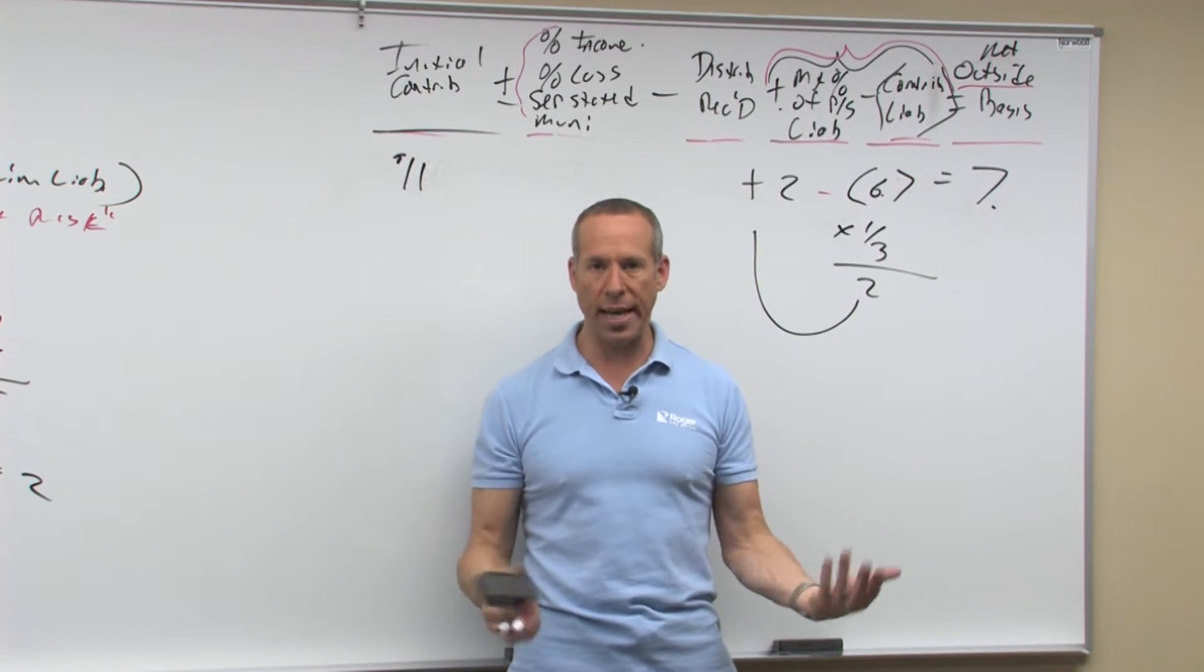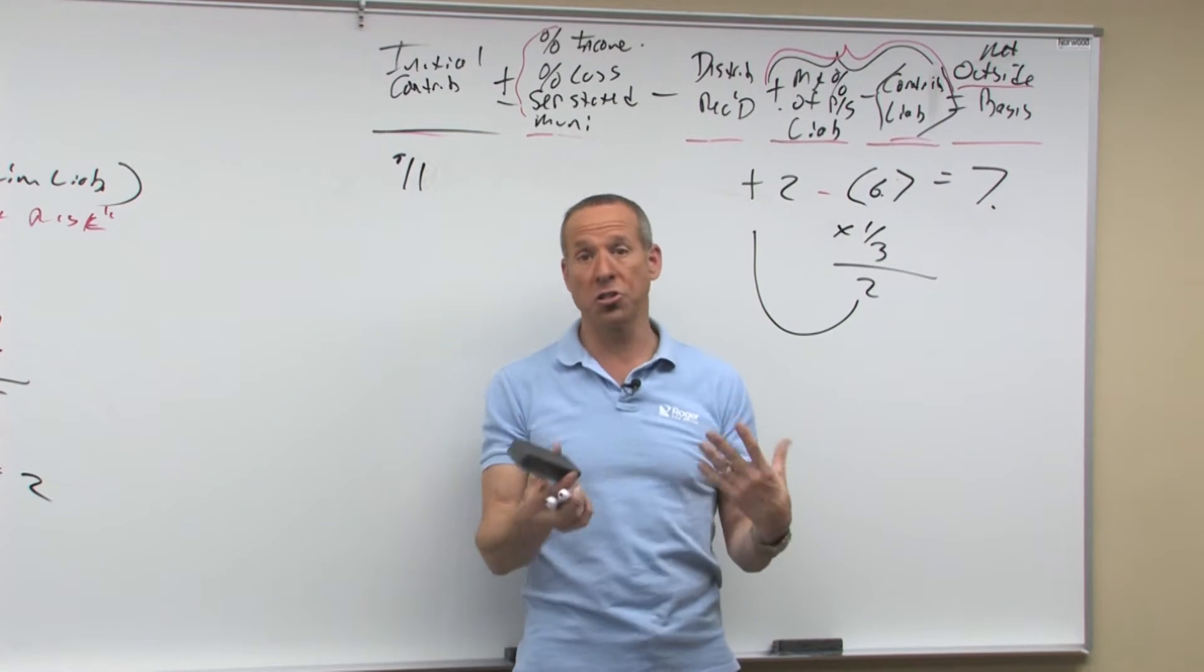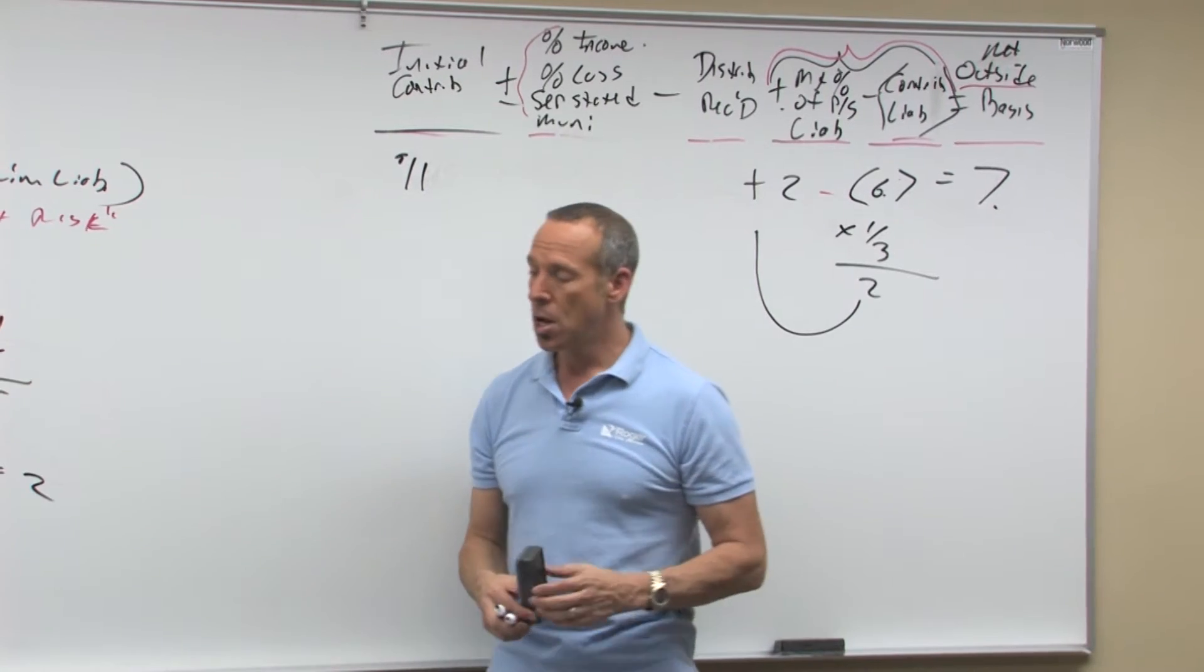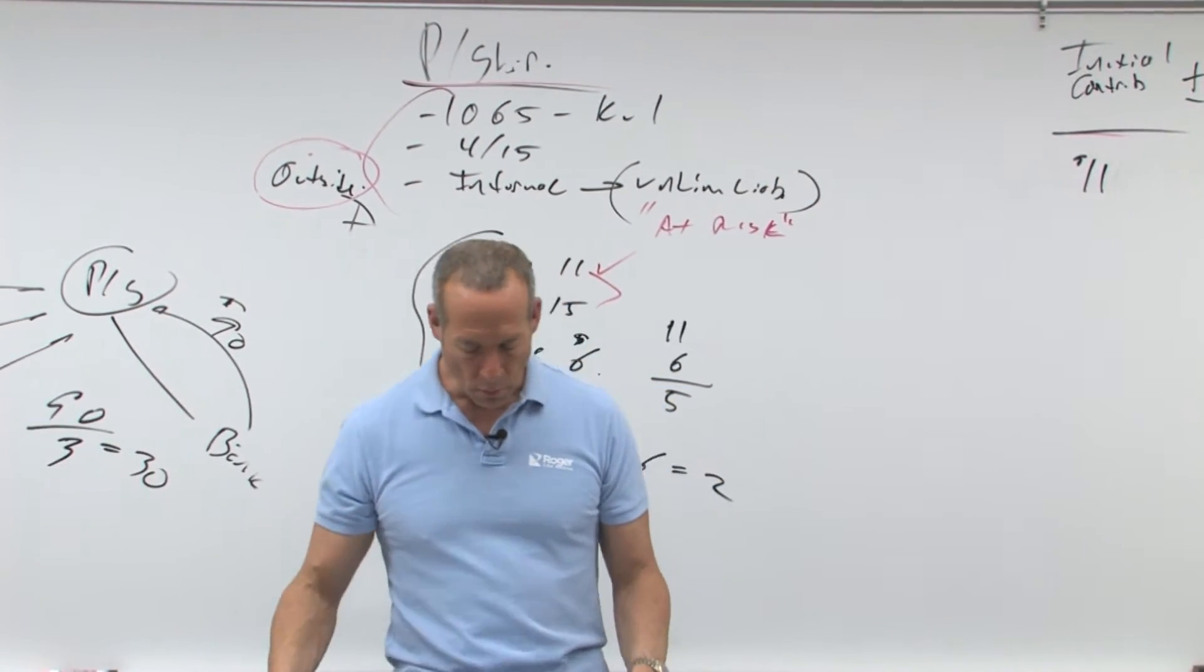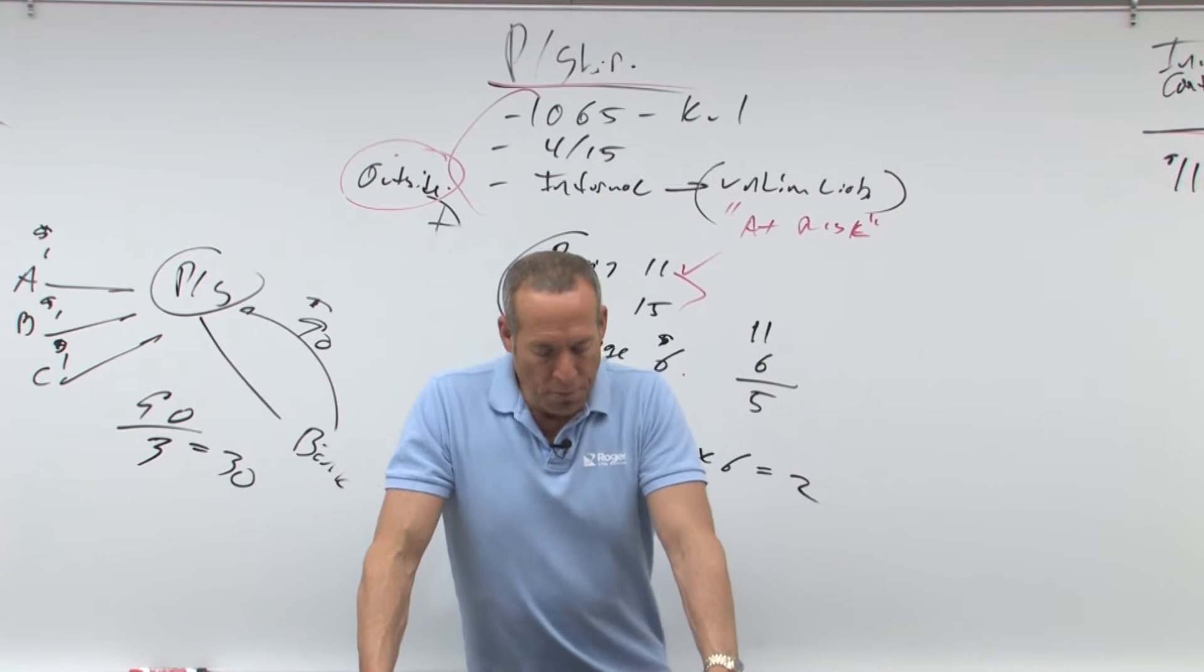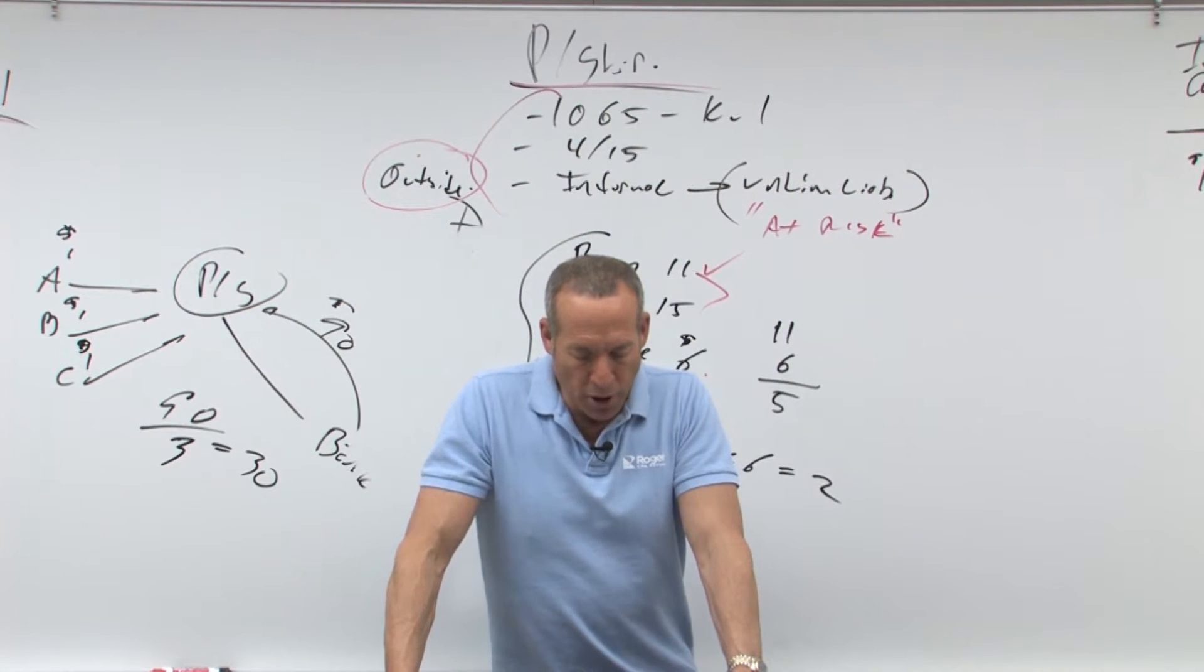Now, let's do the same kind of question again, but let's look at all three partners to see how it affects their basis. So let's go back to that. Assume that ABC partnership is formed with three equal partners,